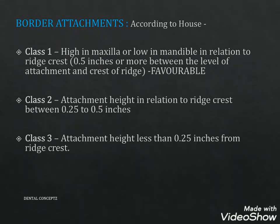Border attachments according to House: In Class 1, the attachments are high in the maxilla or low in the mandible relative to the ridge crest — approximately 0.5 inches or more between the level of attachment and crest of ridge. This is the most favorable situation. In Class 2, the attachment height is between 0.25 to 0.5 inches from the ridge crest. In Class 3, the attachment height is less than 0.25 inches from the ridge crest.